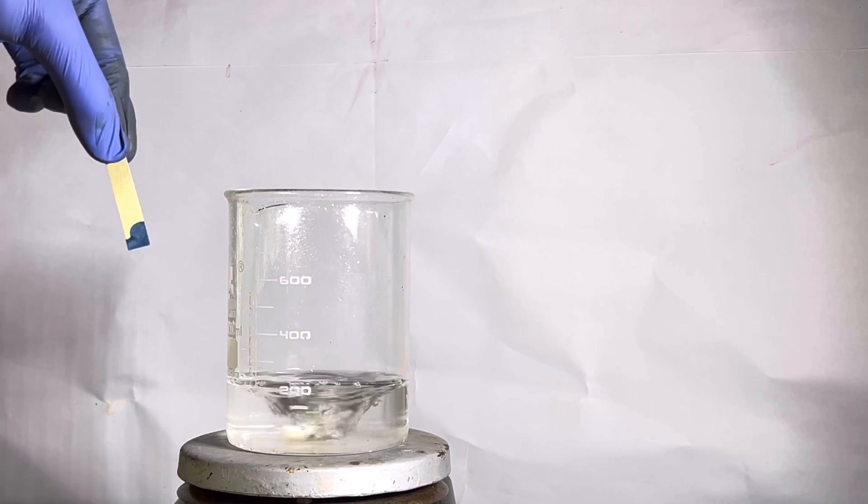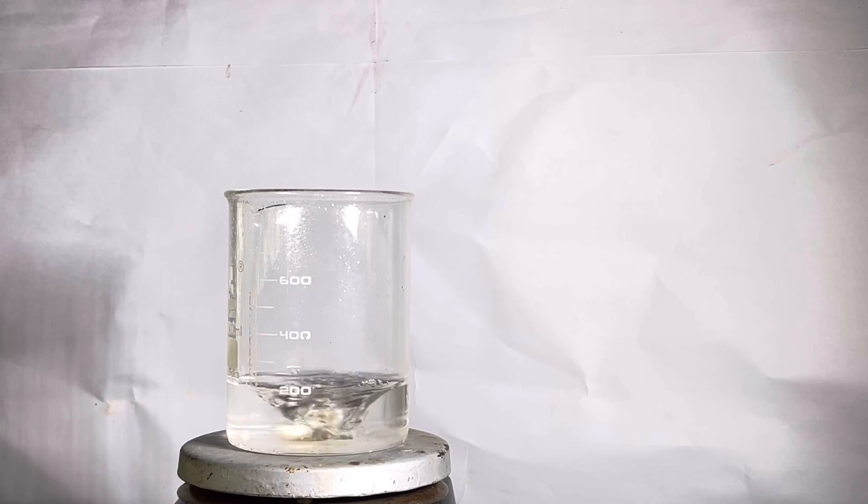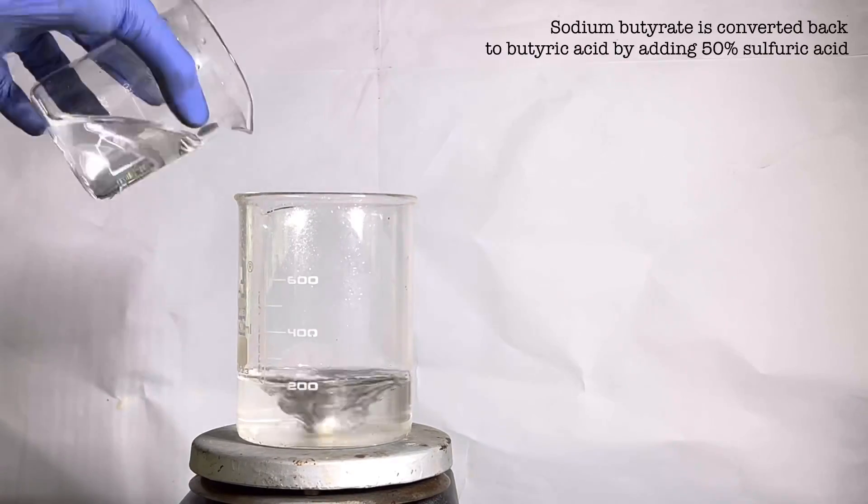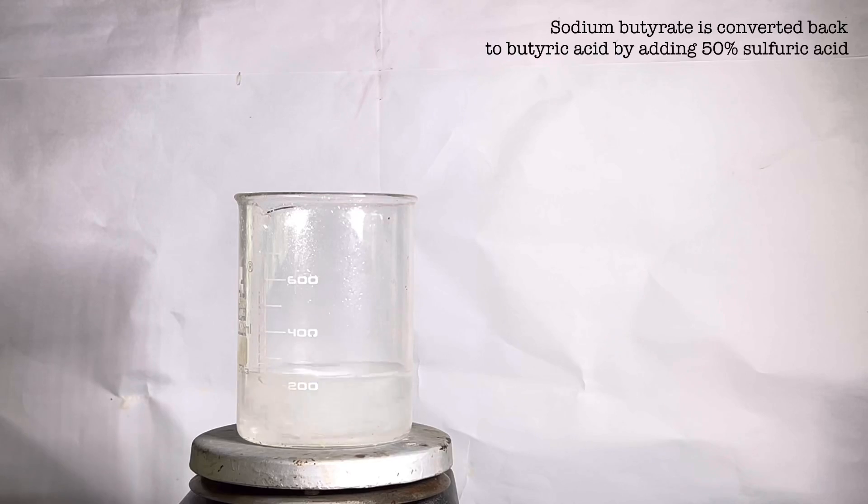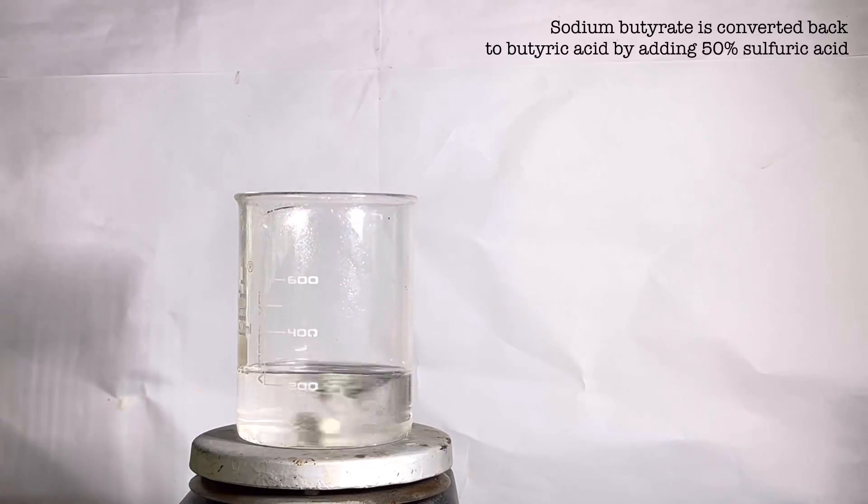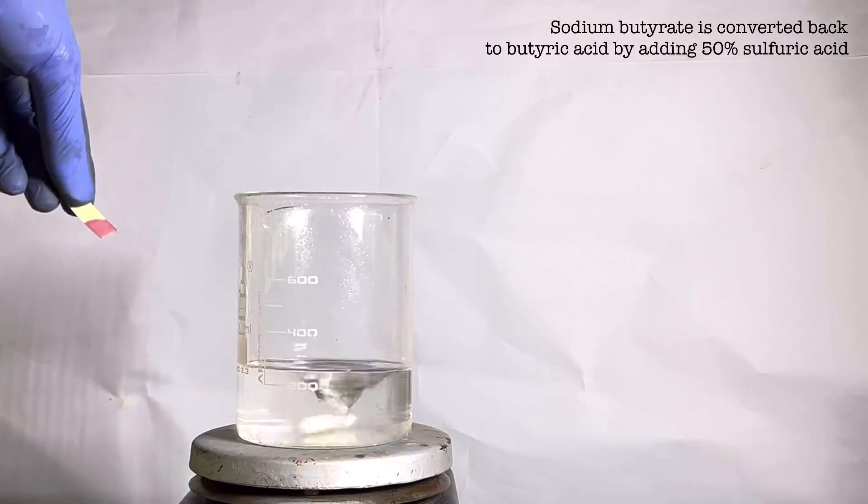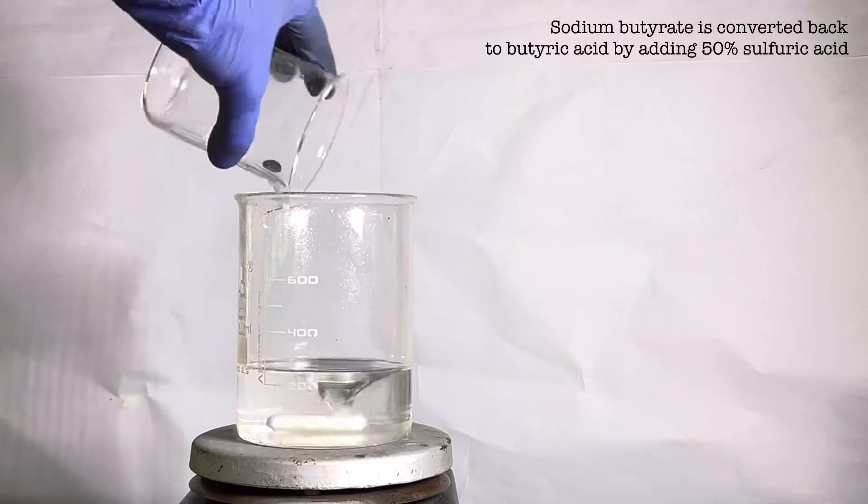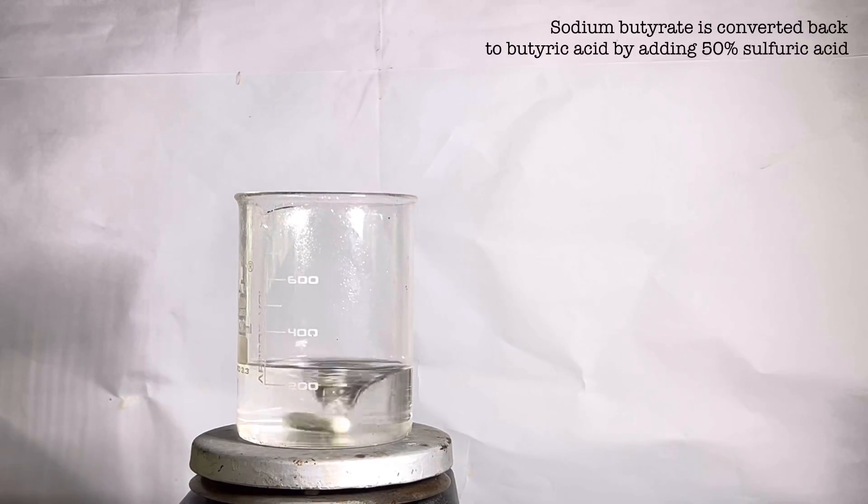Now we will convert the sodium butyrate salt back to butyric acid. For that 50% solution of sulfuric acid is added to the beaker slowly. Immediately the stinky smell of vomitus comes into the environment. The smell is so natural that it would really make you nauseous. Keep adding the sulfuric acid until the solution is acidic confirmed by the pH test. Now the butyric acid is almost in pure state with very less impurities in the aqueous phase.